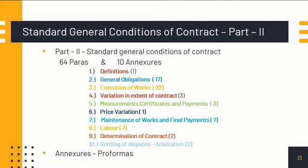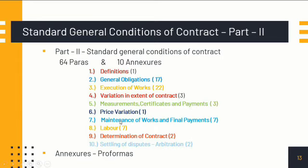Part 2 has the major portion of GCC. After the tender is finalized and the contract is issued to the contractor, the general obligations to be carried out by both the contractor and railways are specified under 'General Obligations' (17 paras). How the work is to be executed is under 'Execution of Works' (22 paras). These two headings occupy the major portion of GCC. Variation in extent of contract deals with situations where work volume goes to 120% or reduces to 80%. Measurements, certificates, and payments cover when and how work is measured and payments made.